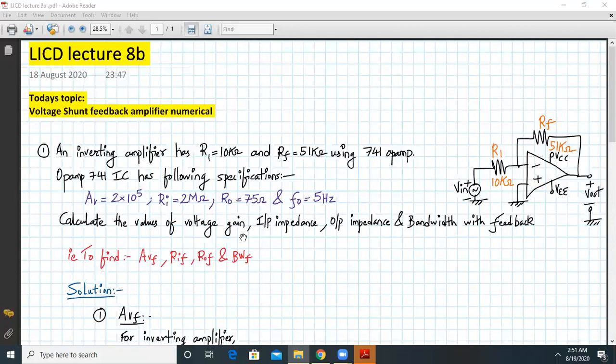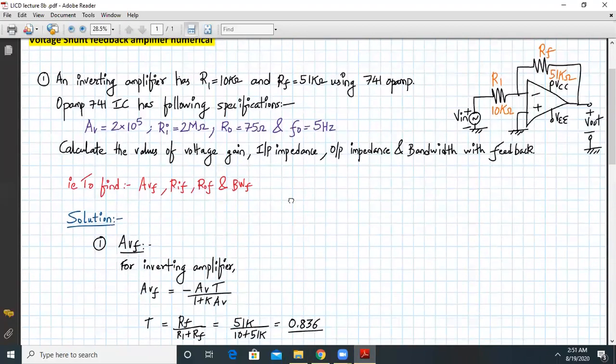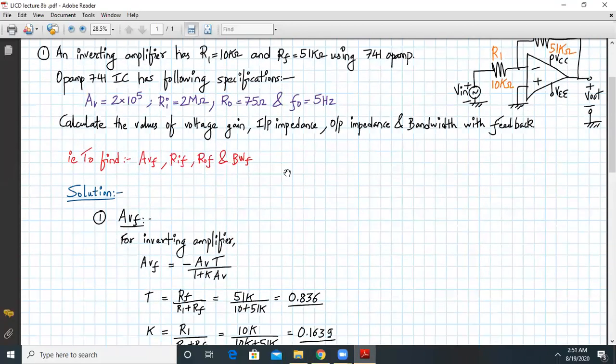We need to calculate the value of voltage gain, input impedance, output impedance, and bandwidth with feedback. So that means we need to find Avf, Rif, Rof, and bandwidth with feedback.